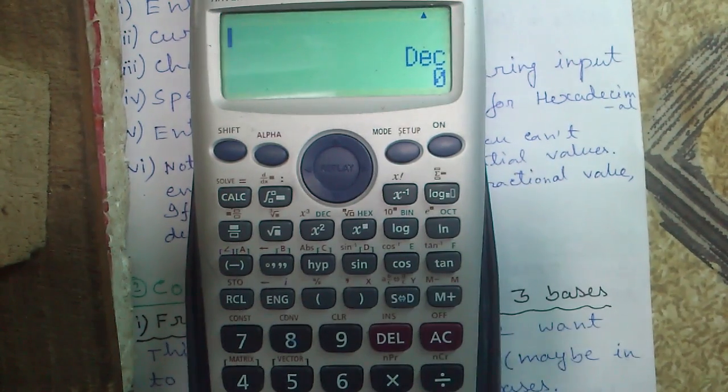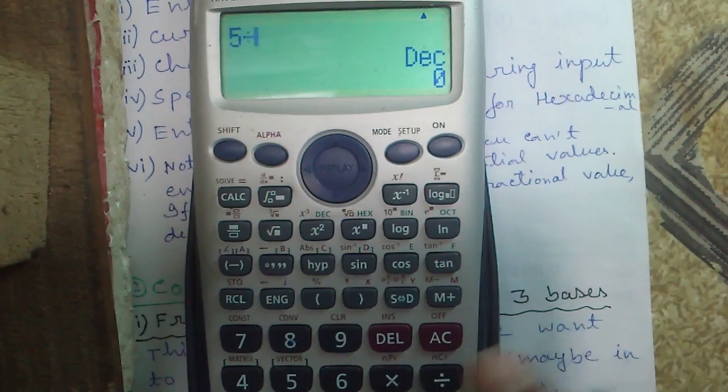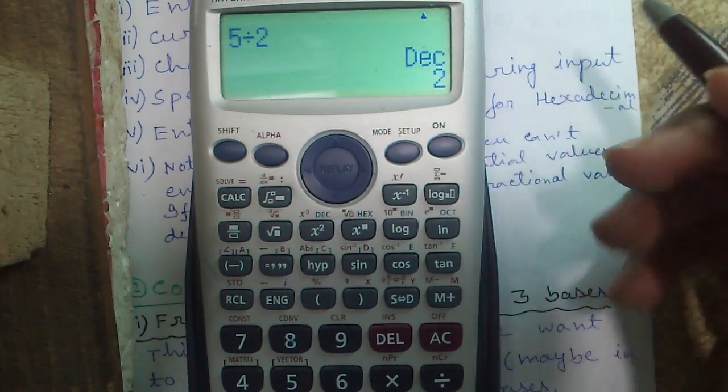Now you can't enter fractional or exponential numbers in Basin number system. If a calculation produces fractional result, then the fractional part is cut off. For example, if I divide 5 by 2, it will produce 2, the 0.5 is cut off.